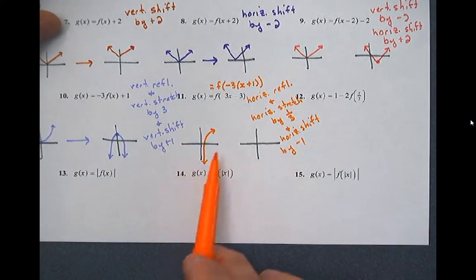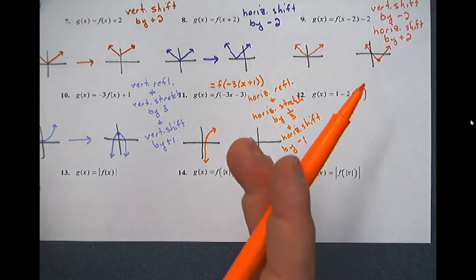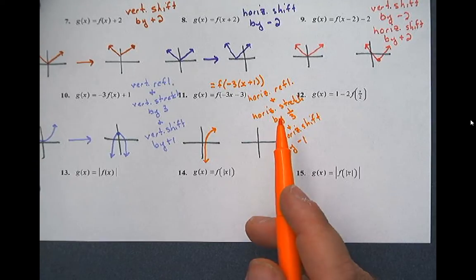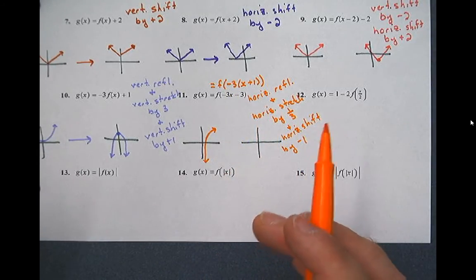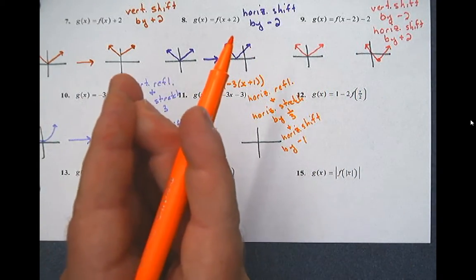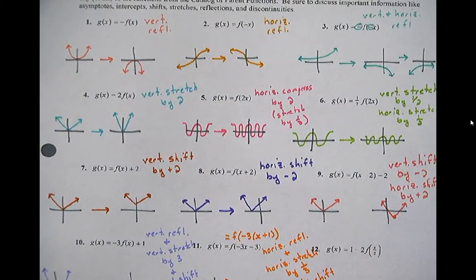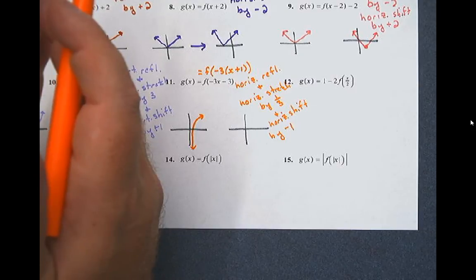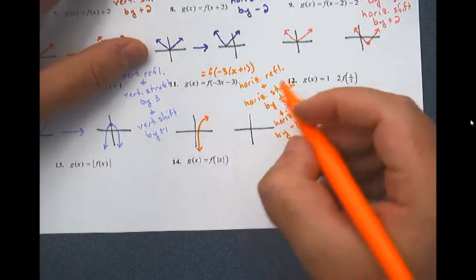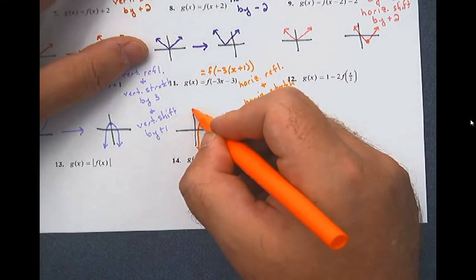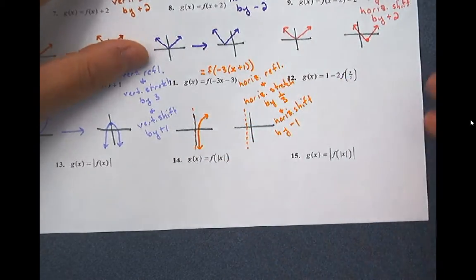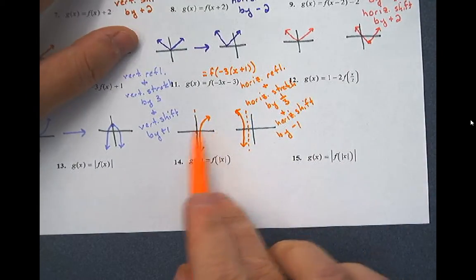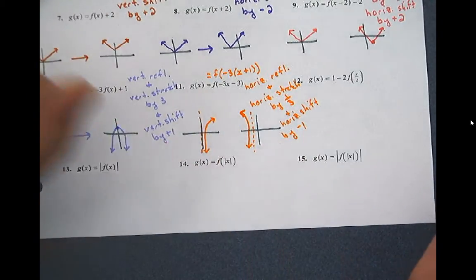Our graph is going to be reflected horizontally, then horizontally stretched by one third — which is going to actually make it get wider. Wait — a stretch by one third is going to get squeezed tighter towards the middle of the graph. Then we're going to shift it back one. I'll figure out where the shift is going to go first — the asymptote shifts back one — then we reflect and squeeze. I reflected it across the other side of the asymptote and tried to draw it tighter to the asymptote. Let's double check this with a calculator.